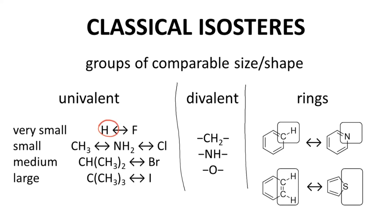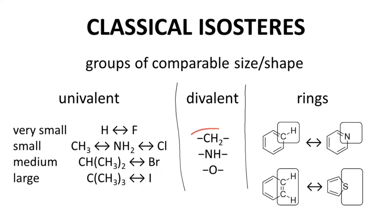For example, swapping a hydrogen with a fluorine is considered an isosteric substitution — the size of a hydrogen atom is about the same as a fluorine atom. A methyl group is about the same size as a chlorine atom, an OH, or an NH2. A t-butyl group is about the same size and volume as an iodine atom. Similarly, a CH2 can be replaced with an NH or oxygen, and CH groups on a benzene ring can be replaced with a nitrogen. These exchanges should not greatly impact potency and target binding, but they might influence metabolism or solubility — two key ADME properties.